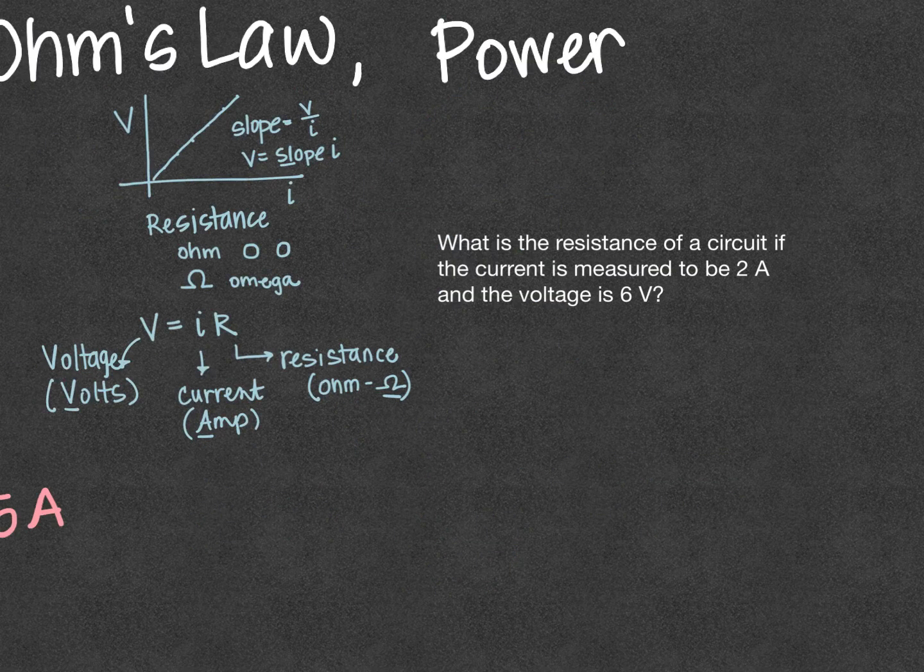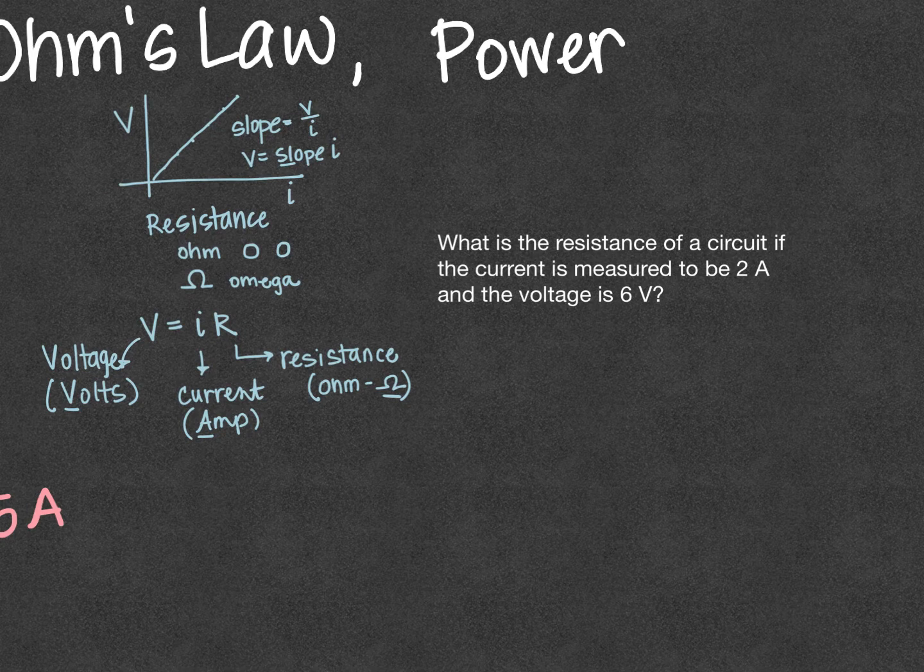So what is the resistance of a circuit if the current is measured to be 2 amps and the voltage is 6 volts?